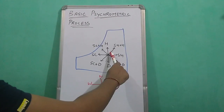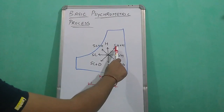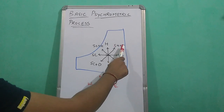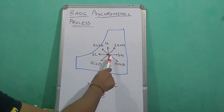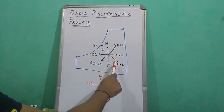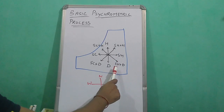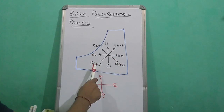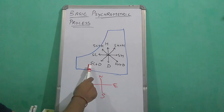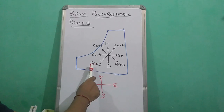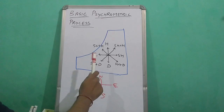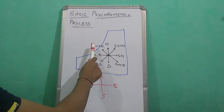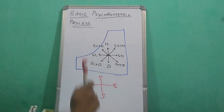If the line goes in the northeast direction, the process is known as sensible heating plus humidification. If the line goes in the southeast direction, the process is known as sensible heating and dehumidification. Similarly, in the southwest direction it is called sensible cooling and dehumidification, and in the northwest direction it is called sensible cooling and humidification.